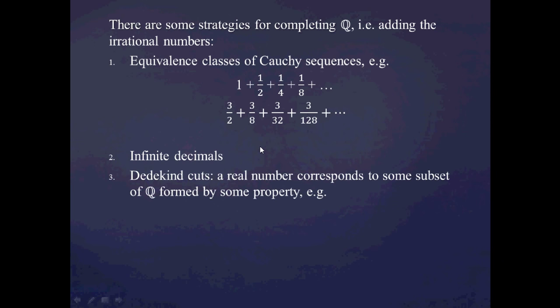The main canonical theoretical construction of the real numbers involves Dedekind cuts. A Dedekind cut is a definition of a real number based upon a special subset of the rational numbers. Basically, Dedekind's idea was that if you have even an irrational number corresponding to a gap in the rational numbers, you can define that number as a real number just by giving all of the rational numbers to the left of that particular number on the number line.